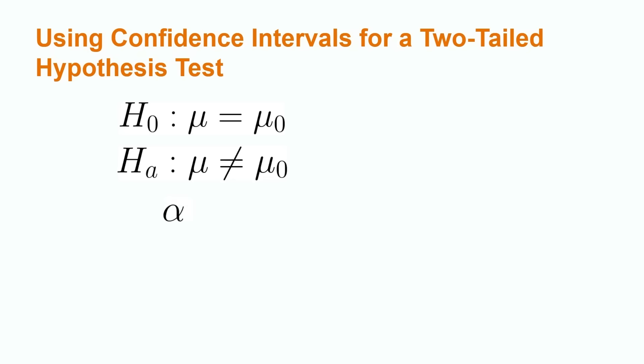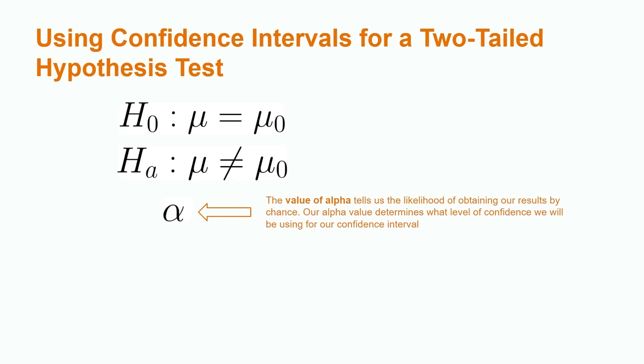Another value we need to consider when using confidence intervals in the context of hypothesis tests is our alpha level. The value of alpha tells us the likelihood of obtaining our results by chance. Confidence intervals go hand-in-hand with alpha. Alpha is always 1 minus the confidence level. For example, an alpha level of 0.01 would need to be used with a 99% confidence interval.